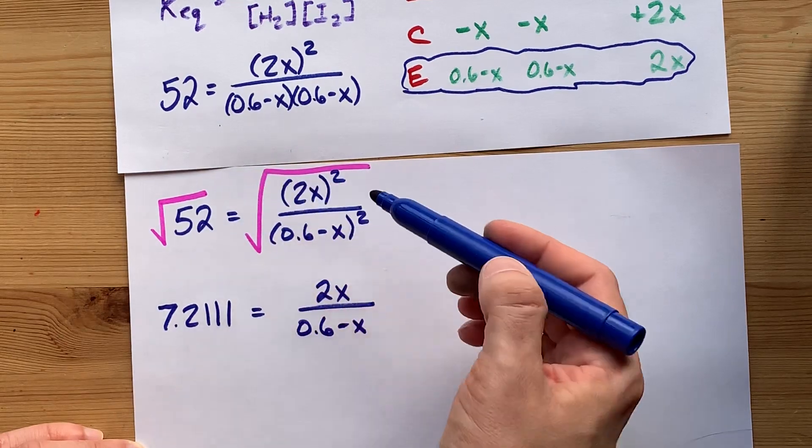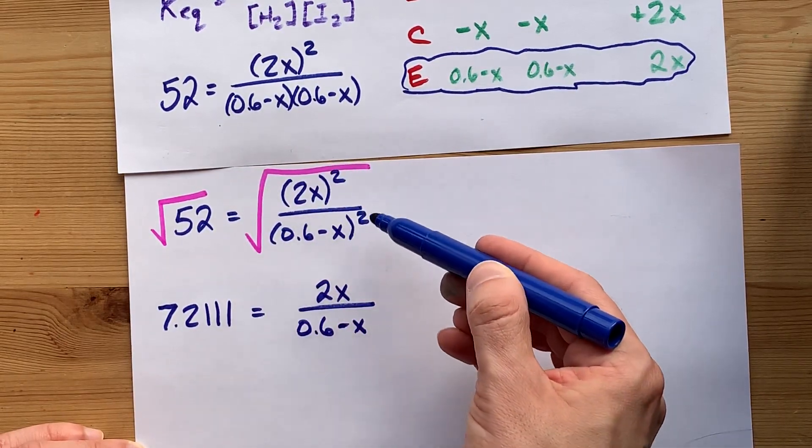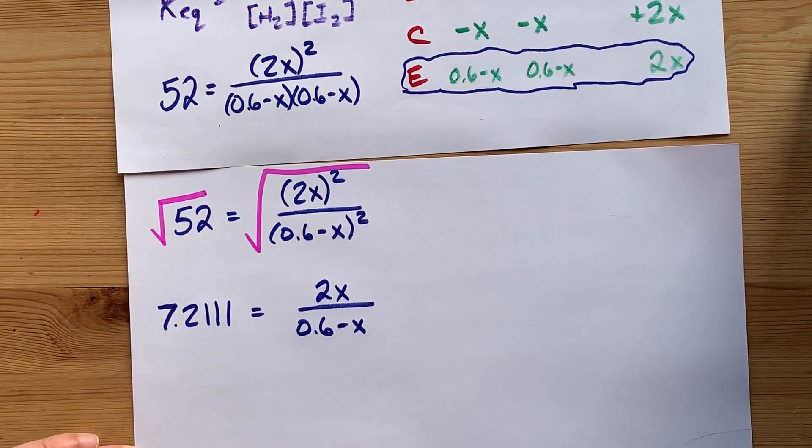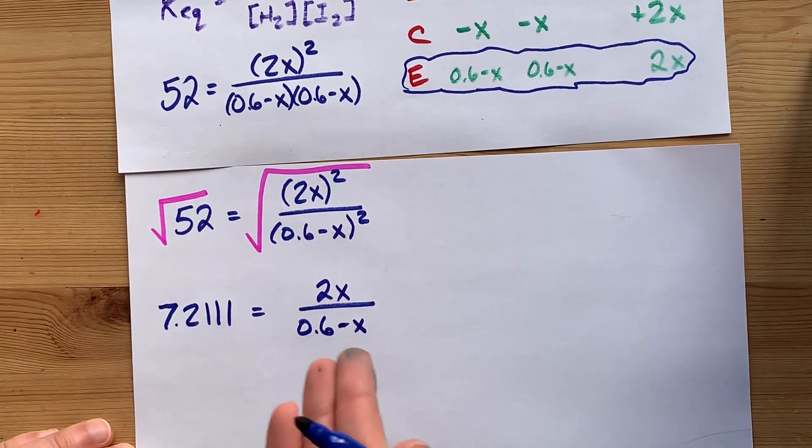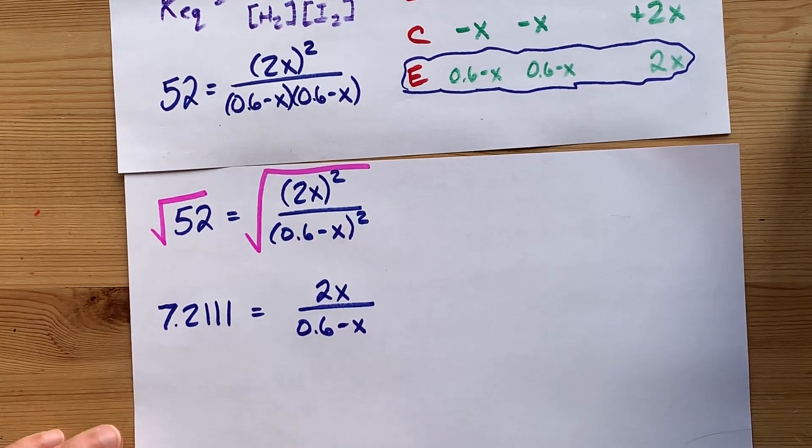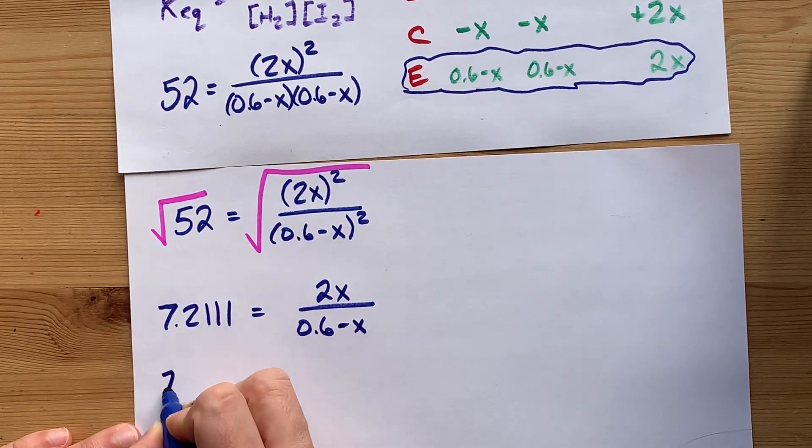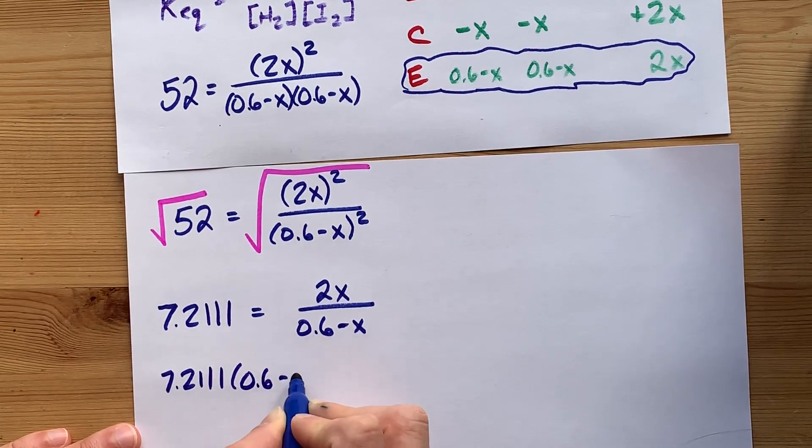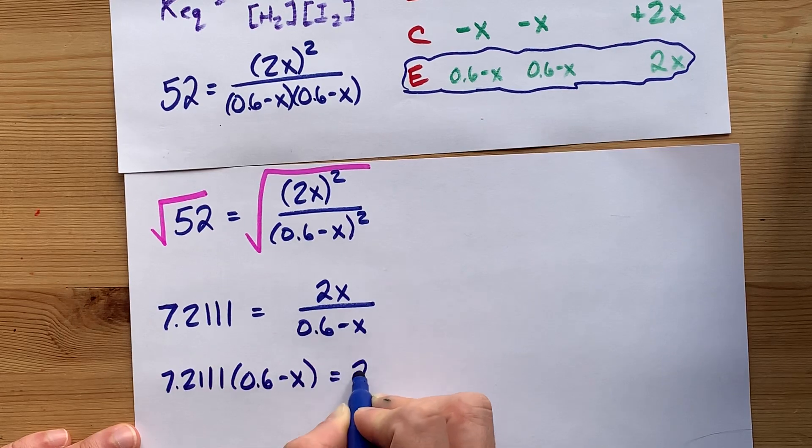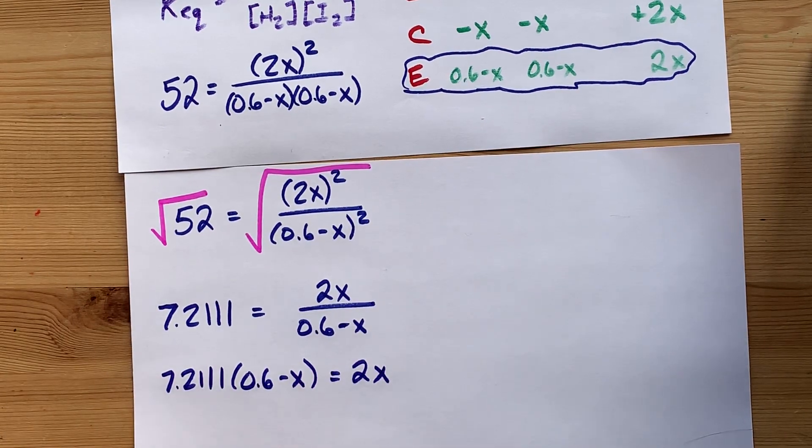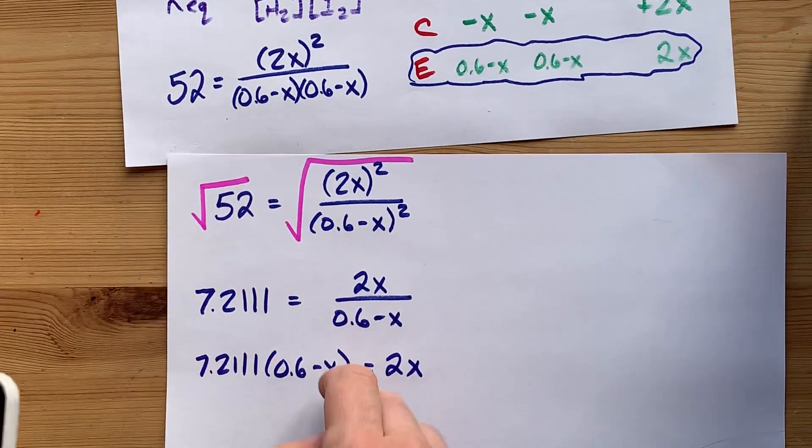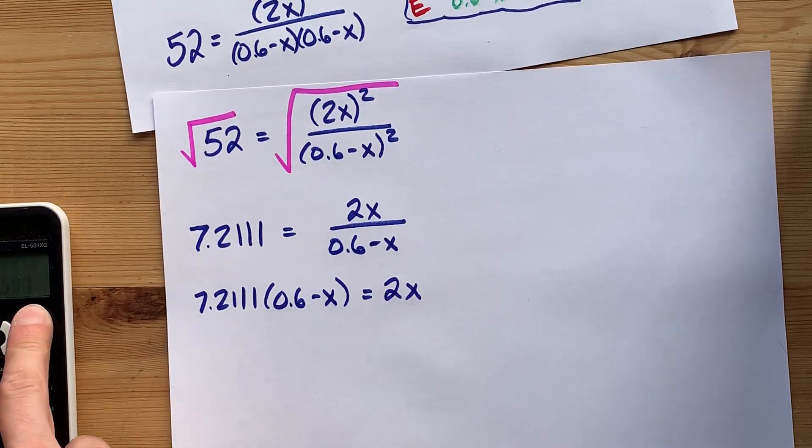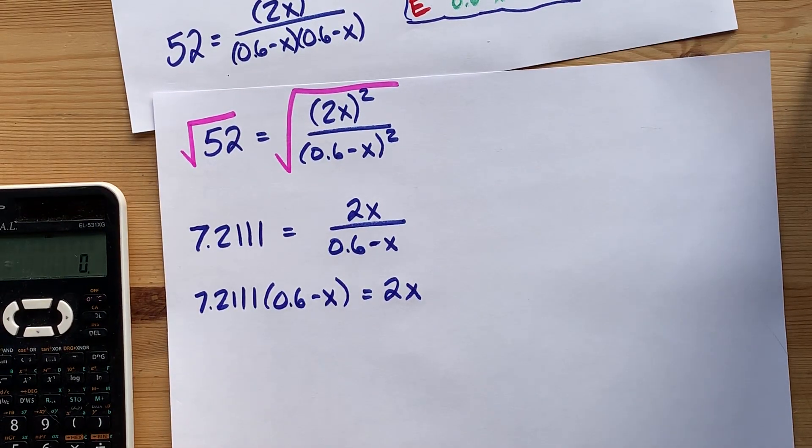You can only do this square rooting trick if everything has an even exponent. This is actually just a linear equation in disguise. You can multiply both sides by 0.6 minus X, or move that to the other side with multiplication if you're into that.